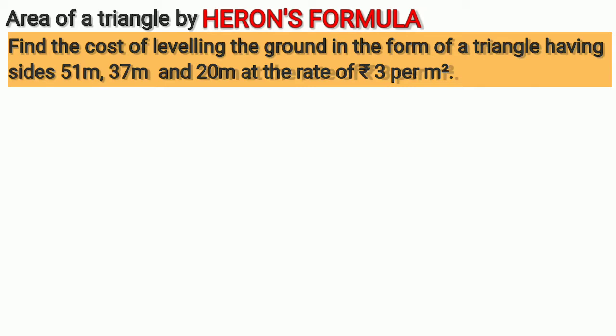We are given that ground is in the form of a triangle and we are given its sides. Let us label the sides as a, b, c. Let side a equals 51 meter, b equals 37 meter, c equals 20 meter.